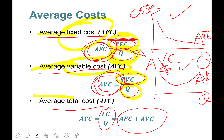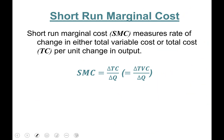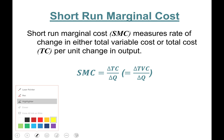Average fixed cost is total fixed cost divided by quantity; average variable cost is total variable cost divided by quantity; average total cost is total cost divided by quantity. Next, let's learn about marginal cost.